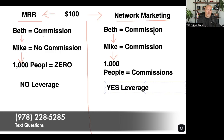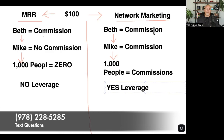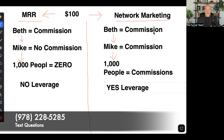Please understand the facts and data here and know the difference between active earning and passive earning, and understand what residual income actually is. Residual income is income that comes in whether you work or not. And when you're selling master resale right courses, the second you stop promoting that content or that course, the income falls off. It's the same concept in affiliate marketing.